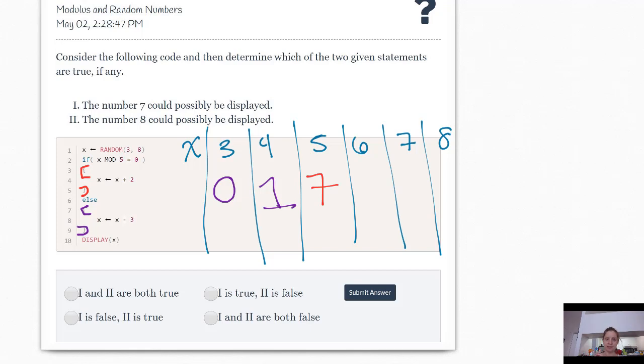Now 6. If 6 mod 5 is equal to 0. Nope. 6 divided by 5 has a remainder of 1. So X is going to be X minus 3, which will be 3. Then 7. 7 divided by 5 has a remainder of 2. So we're going to do the purple else, which is X is set to X minus 3.